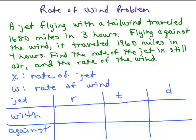I'm going to let X represent the rate of the jet in still air, and W the rate of the wind.